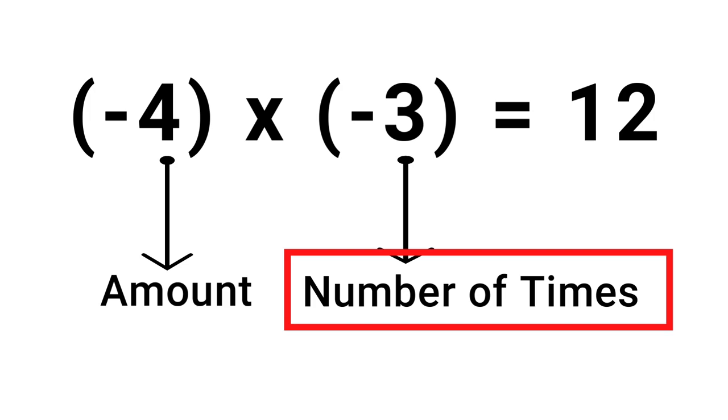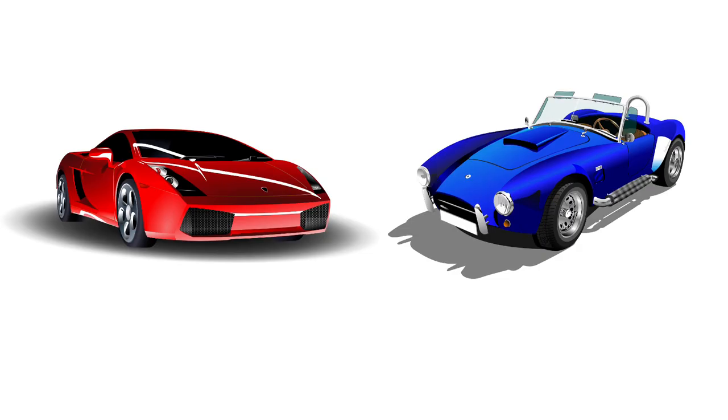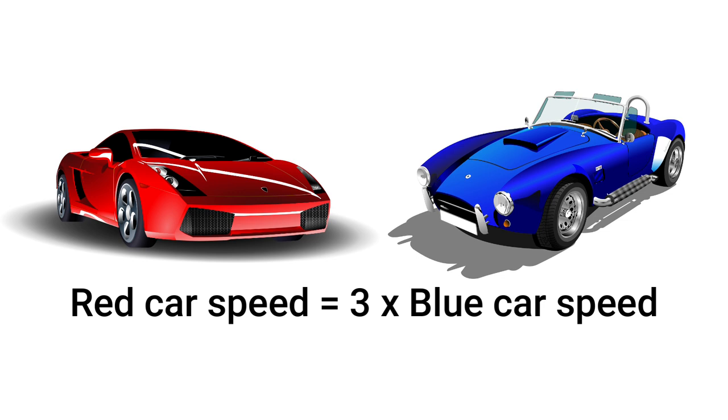Let's say for example, we are comparing the speed of a red car and a blue car. And I say that the red car is three times faster than the blue car. This would be a logical statement. But if I say that the red car is minus three times faster than the blue car, it will not make any sense. It would be an illogical statement.